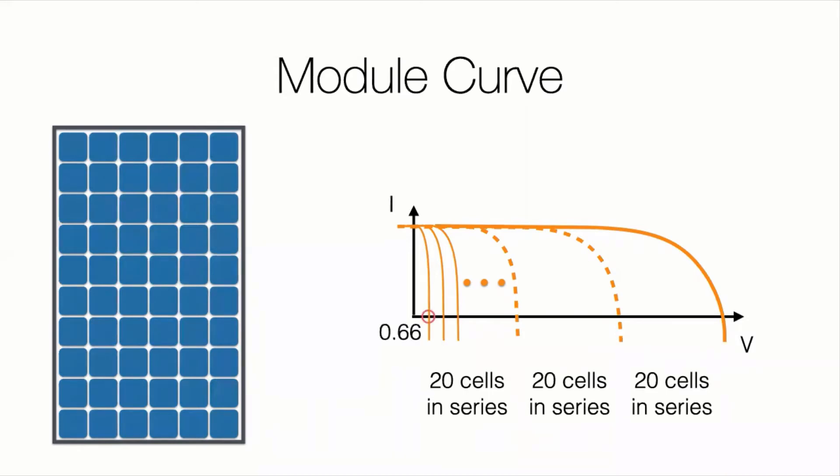So if the open circuit voltage of one cell was 0.66, after 60, the open circuit voltage of the module would be 40. If the max power voltage was 0.53, the max power voltage of the entire module would be at around 32.